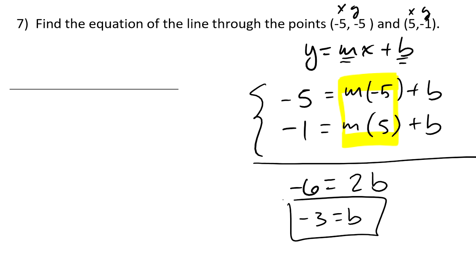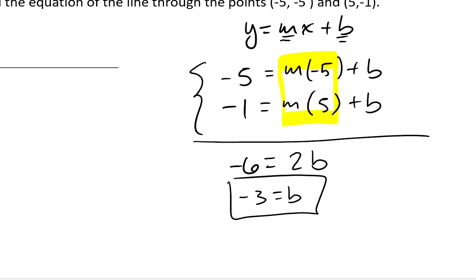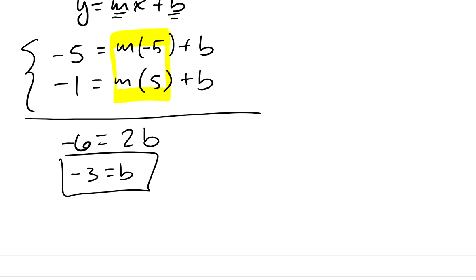In order to figure out the slope, I'm just going to take that and plug it into either one of the equations. I guess I'll just randomly decide to use this one. I'm going to grab this equation and I'm going to plug in the value of b that I found and solve for m, my slope.